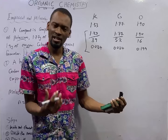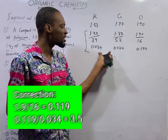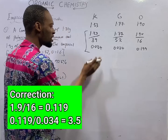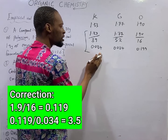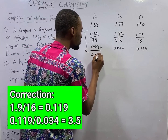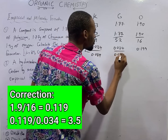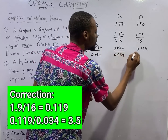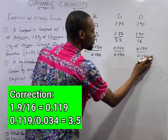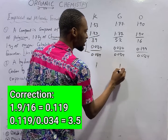The last step in empirical formula is to divide by the smallest number of moles. The smallest number here is 0.034. When you divide each of the mole values by 0.034, you get 1 for potassium and 1 for chromium.